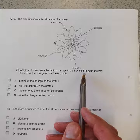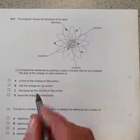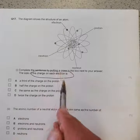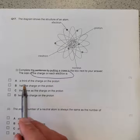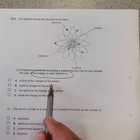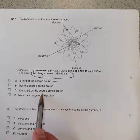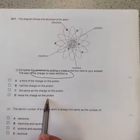Complete the sentence by putting a cross in the box next to your answer. The size of the charge on each electron. The size of the charge on each electron is a third of the charge on the proton, half the charge on the proton, the same as the charge on the proton, or twice the charge on the proton.